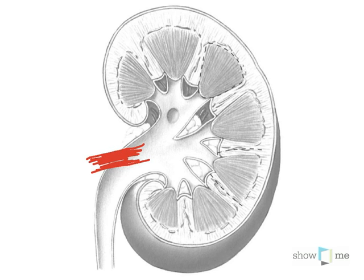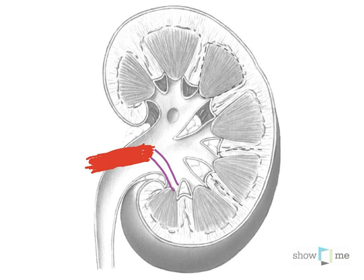We can draw in the renal artery coming into the kidney, supplying the kidney. If we have a blockage here we can have nephritis, a kidney that goes necrotic. This brings the blood inwards. Coming off the large renal artery, we have a segmental artery passing inside the kidney.